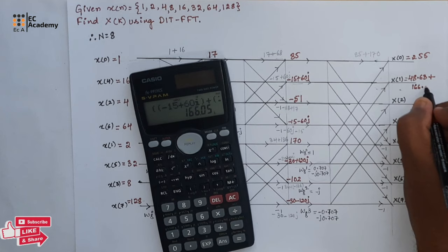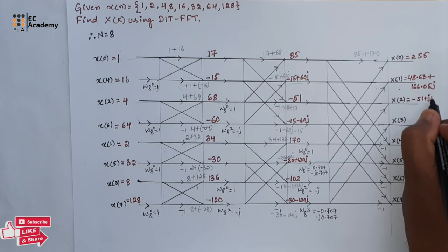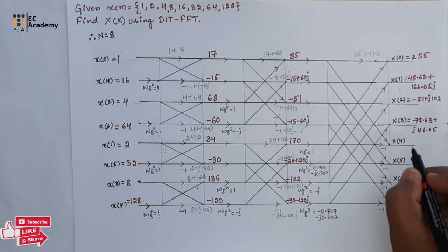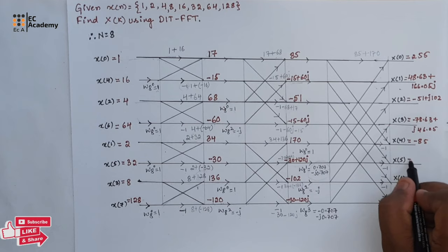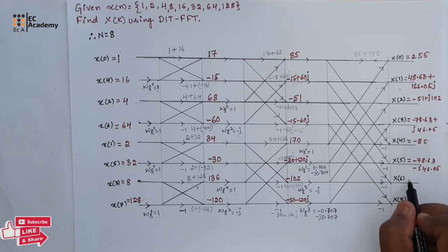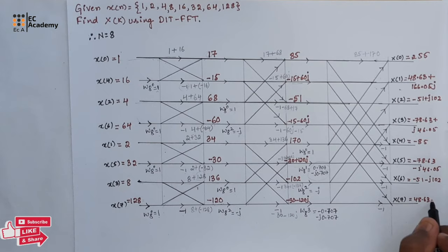In the same way, we calculate the remaining outputs. For x of 2: minus 51 plus j 102. For x of 3: minus 78.63 plus j 46.05. For x of 4: minus 85. For x of 5: minus 78.63 minus j 46.05. For x of 6: minus 51 minus j 102. For x of 7: 48.63 minus j 166.05.